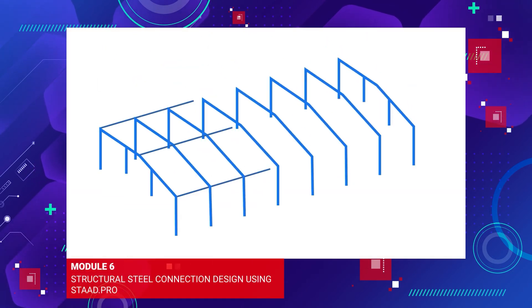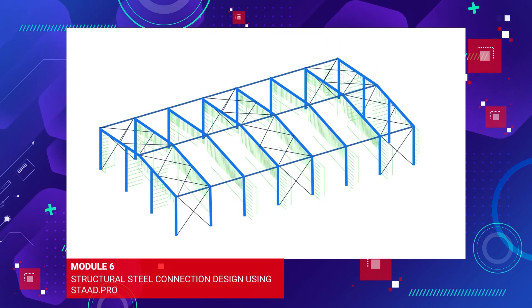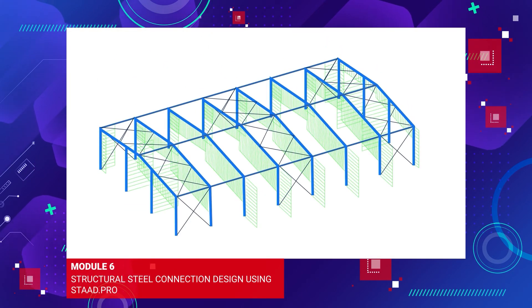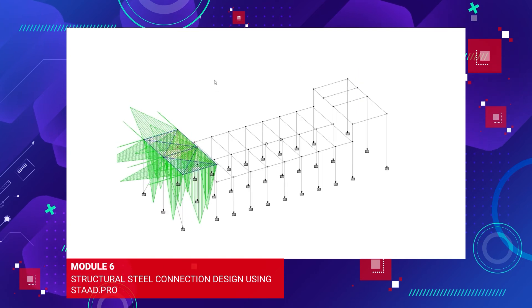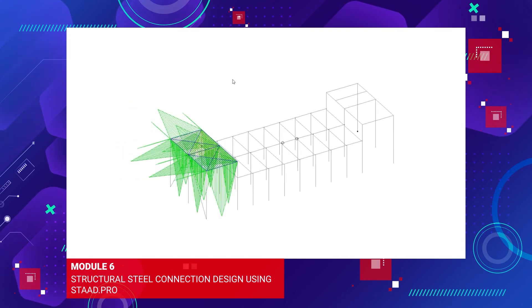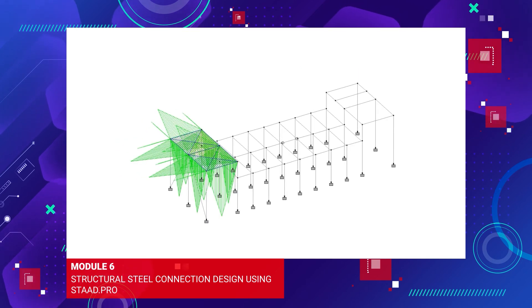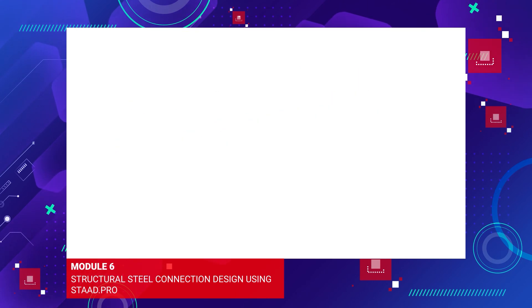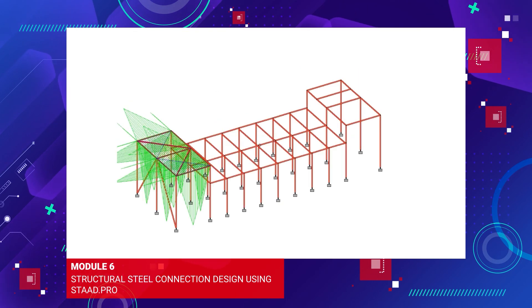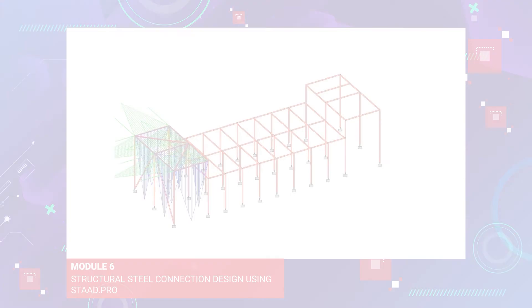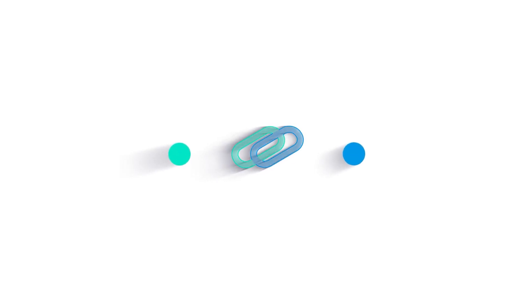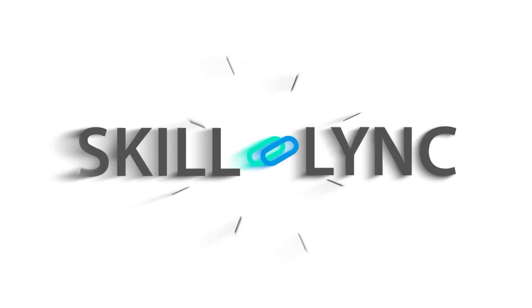Module 6 covers steel connection designs using STAT Pro. Learn how to use STAT Pro to solve real-world problems in connection design with this state-of-the-art tool. Become a complete structural engineer with Skilllink.